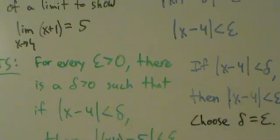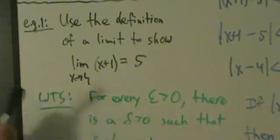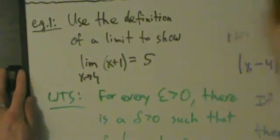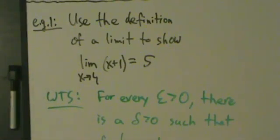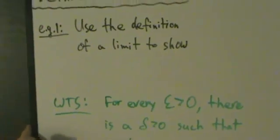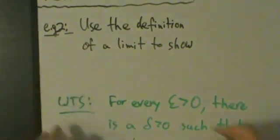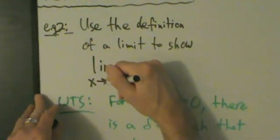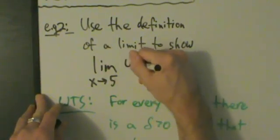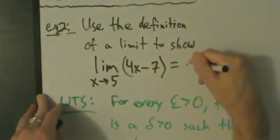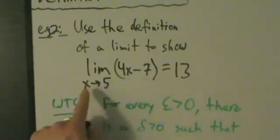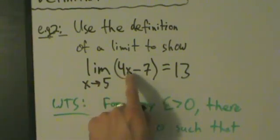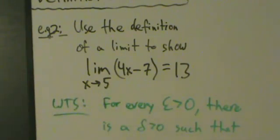Let's go ahead and do another example that's similar to this but a little more complicated. Example 2: use the definition of a limit to show that the limit as x approaches 5 of 4x minus 7 equals 13. We know from direct substitution that this is true — as x approaches 5, 4x minus 7 equals 13. So how do we show that with the formal definition of a limit?